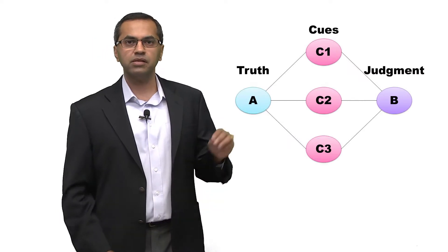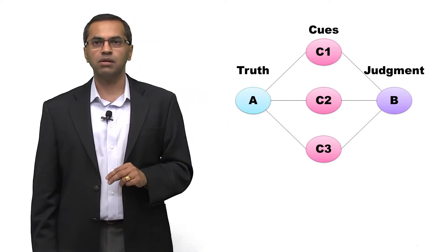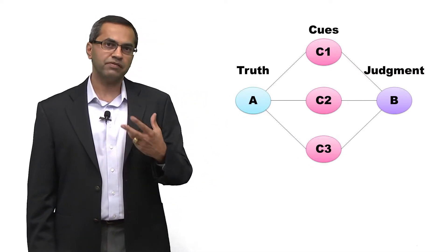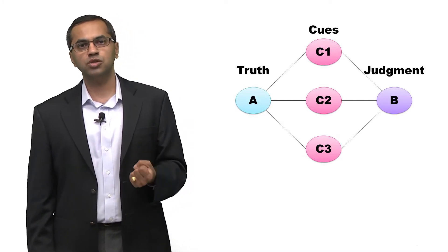Let's look at this model, for example. This is what is called the lens model, and it comes to us from a part of psychology known as social judgment theory.